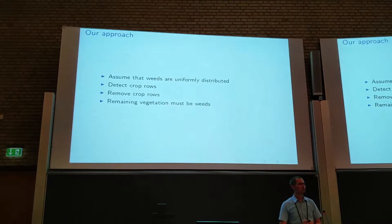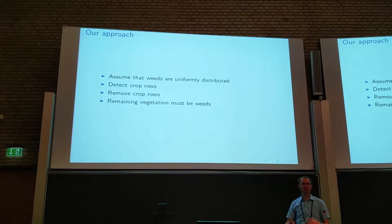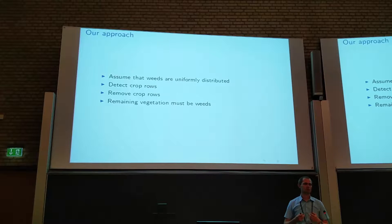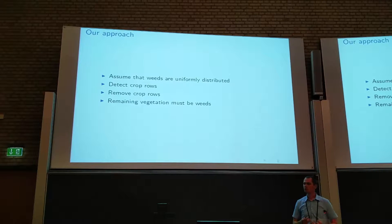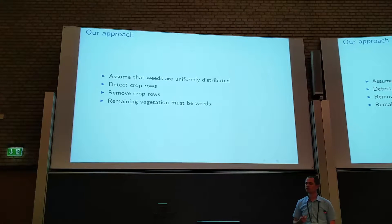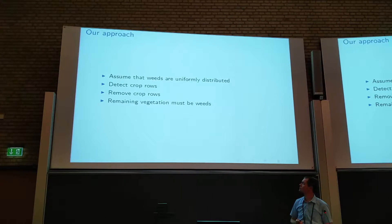The approach I've chosen is based on an assumption that weed plants will occur both in the crop row and between crop rows, so they are not only present in one of these two regions. This rules out using crop row harrowing, because it only controls the weeds between the two crop rows. The overall approach is to detect crop rows in the image, remove these crop rows and the vegetation in them, and whatever vegetation is left out of position is weed plants.